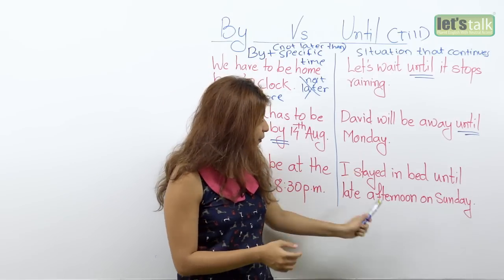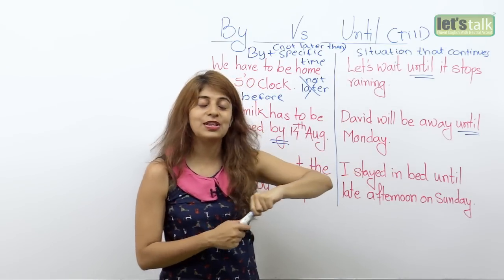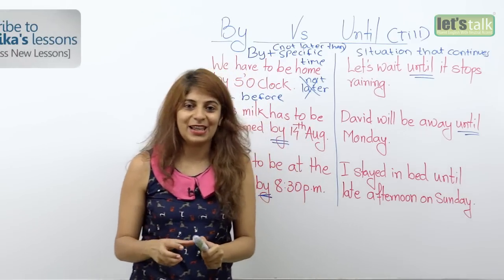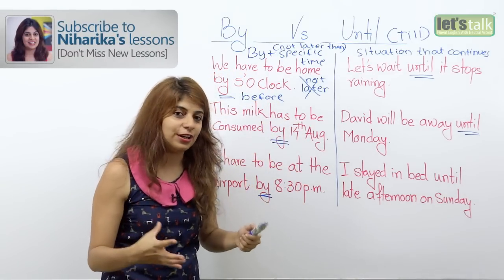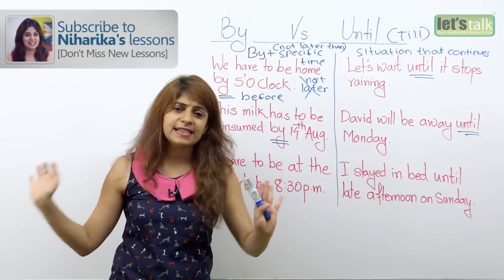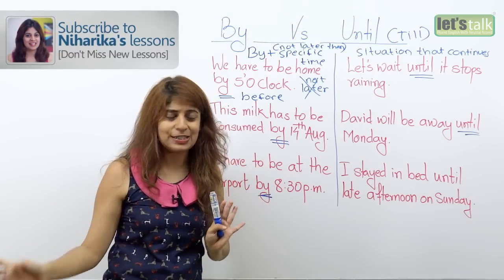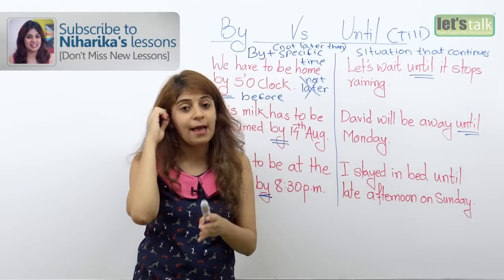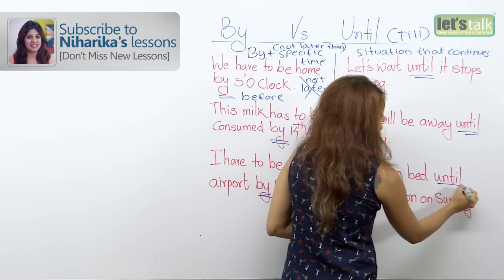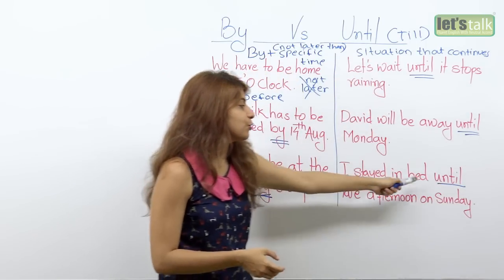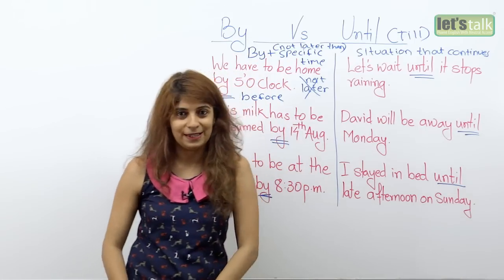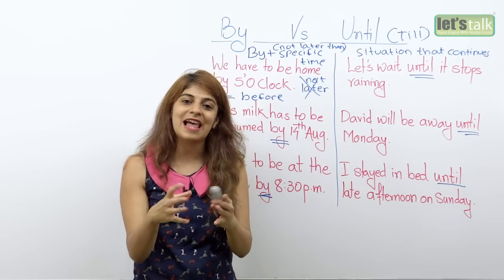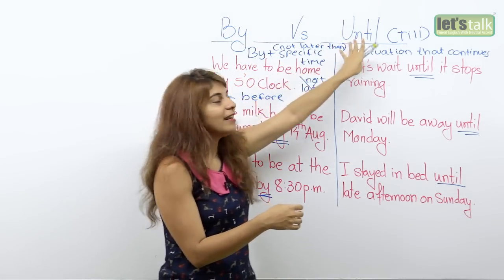Another example for 'until': 'I stayed in bed until late afternoon on Sunday.' Here you are talking about the duration — Sunday is a lazy day and you like to sleep in. We are talking about the duration of your sleep, that's why we use 'until'. You can also say: 'I stayed in bed till late afternoon on Sunday.' These examples help you understand the difference between 'by' and 'until'.